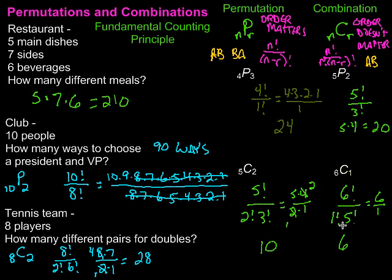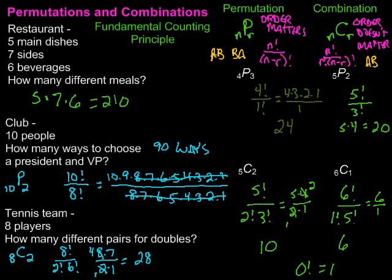One other thing to remember: if you end up with a 0 factorial, that is defined as 1 — it's not 0, because we can't divide by 0. To summarize: use permutations when order matters, combinations when order does not matter. The formulas are very similar — the only difference is the R factorial in the combination formula, which gets rid of the duplication. Also remember the fundamental counting principle: just multiply the possibilities to get the total number of combinations.